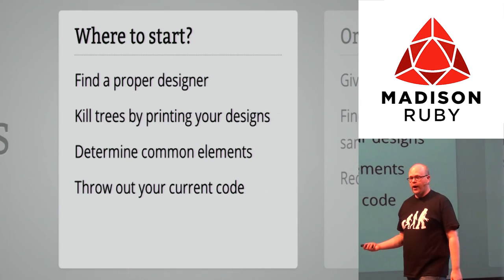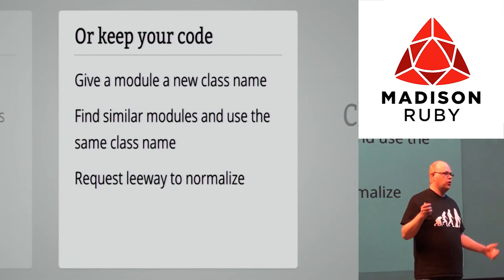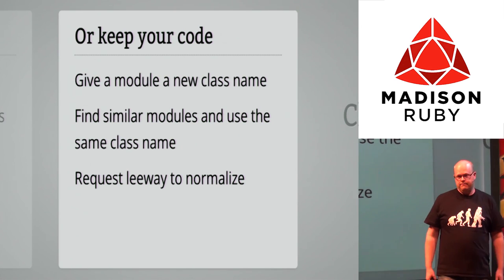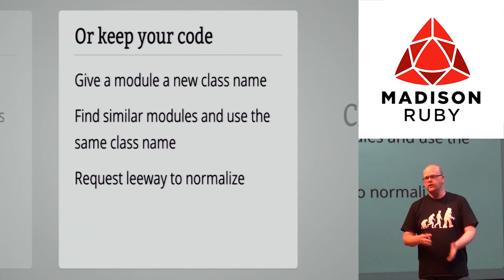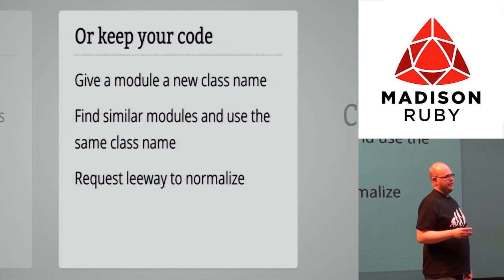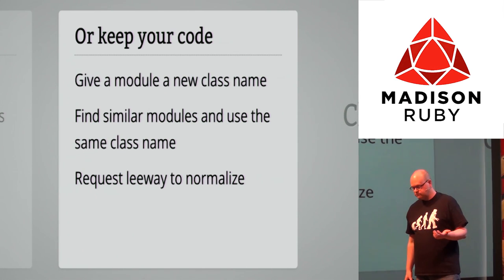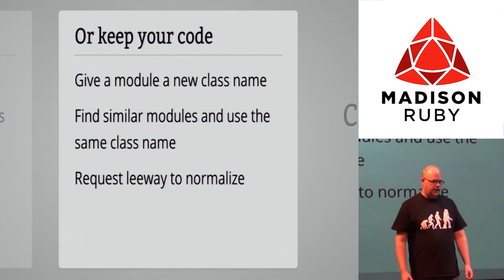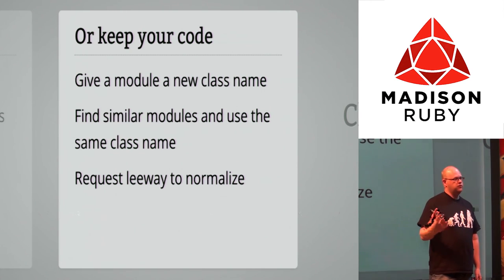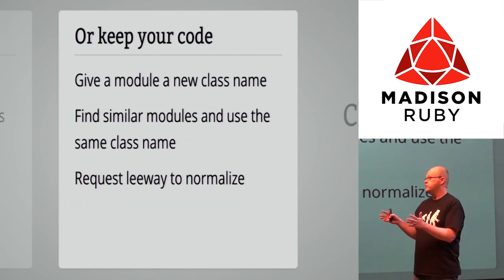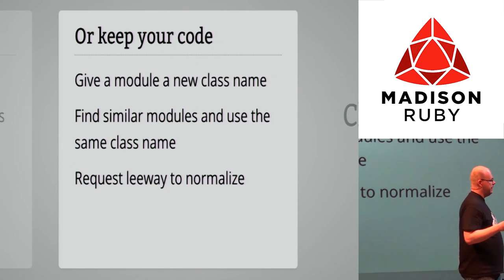Determine those common elements and throw out your current code. If you can't throw out five years of code, at some point you need to refactor. If you want to switch to a modular approach, start by giving modules a new class name so you know there'll be clashes between old and new code. Find similar modules and give them that same new class name. Request some leeway to normalize — sometimes you have to go through committee or to a designer and say these two modules look almost alike, I'll turn them into one thing so it's easier for maintenance and reusability.